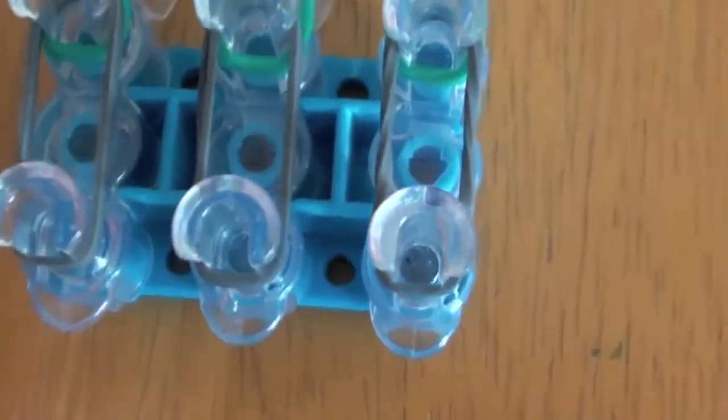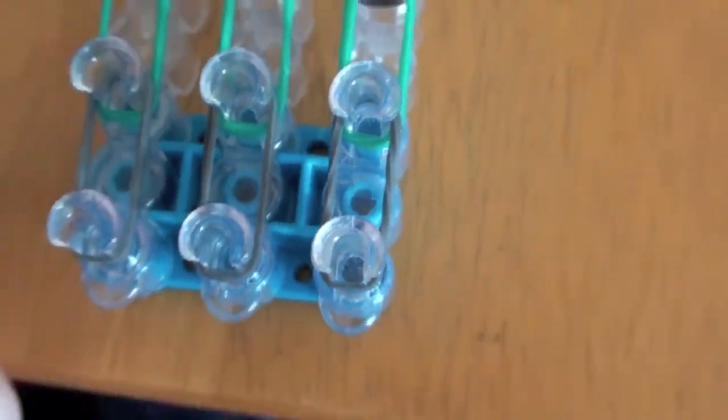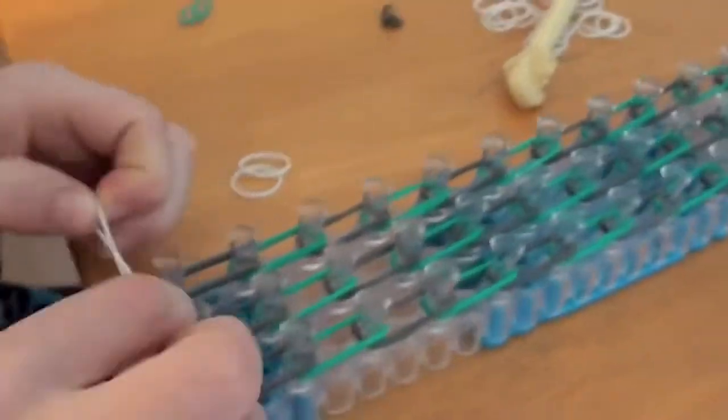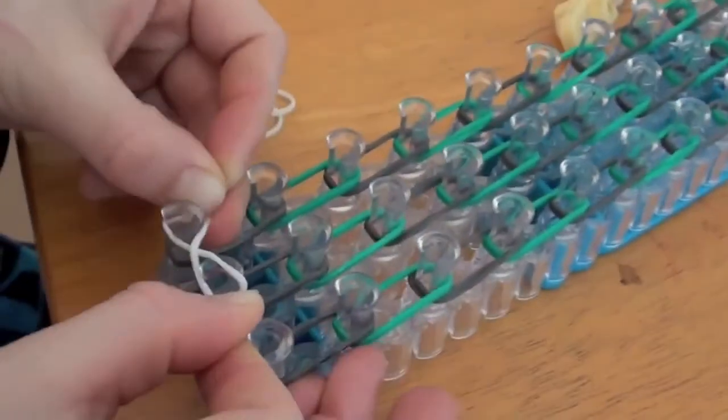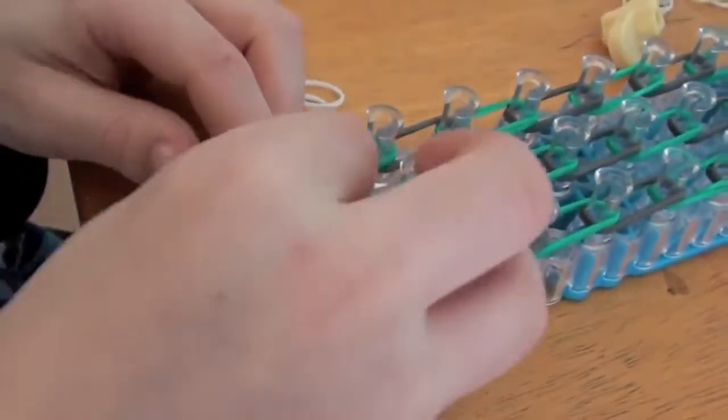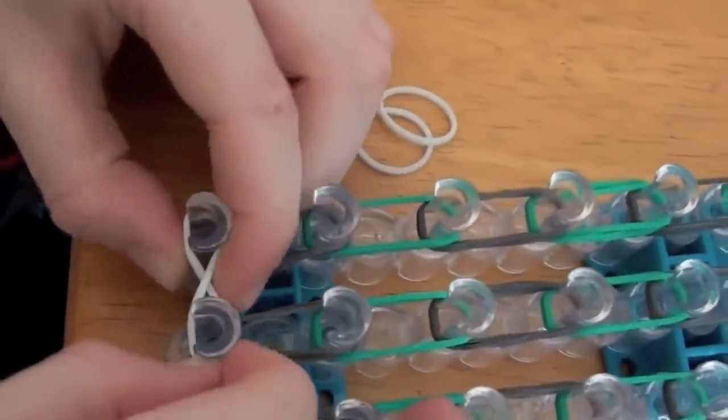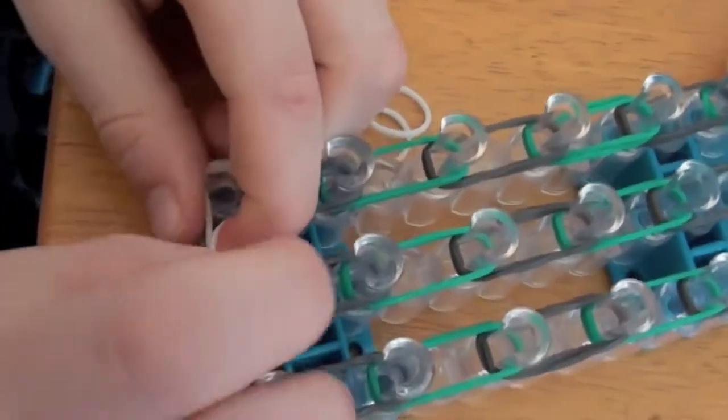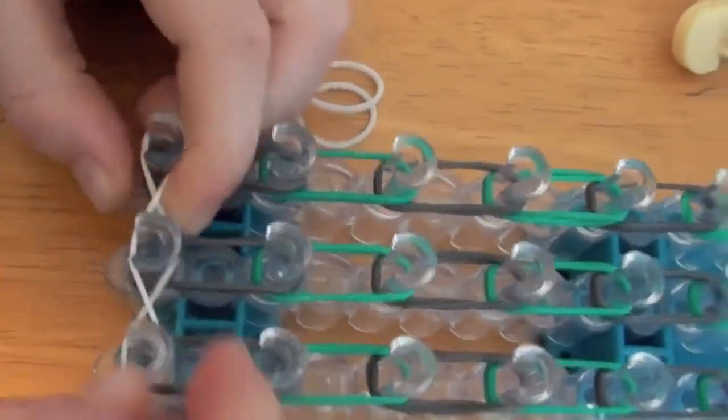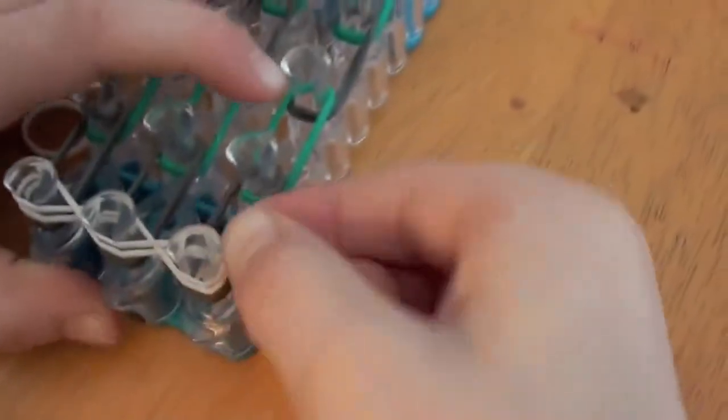Now turn your loom around. Now you want to grab three bands of the middle color, take one band, flip it like this, then take this side and flip it over again. Now do this again, and then do it one more last time.